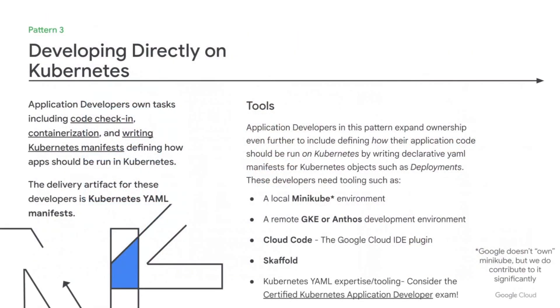In pattern three, we explore an even more involved approach: developing directly on Kubernetes. In this pattern, application developers own the tasks of patterns one and two — completing code check-ins and containerizing their application code — and they pick up the additional responsibility of understanding Kubernetes enough to define how their containerized applications should run on Kubernetes by writing Kubernetes declarative YAML manifests. These manifests are key to the beneficial declarative nature of Kubernetes. The YAML manifests describe the container as well as details about how that container should be run in an environment, including storage and networking configurations built into the API of objects provided by Kubernetes.